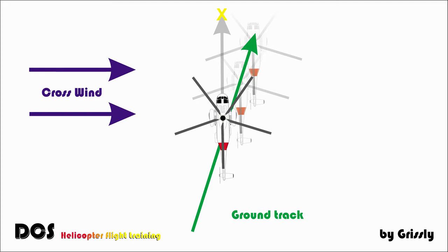So what happens with crosswind is our desired ground track — the gray arrow — targets the yellow cross, which is the intended flight path. But the crosswind will push us away from the intended flight path. If you do not correct for that crosswind, you won't get to your target.